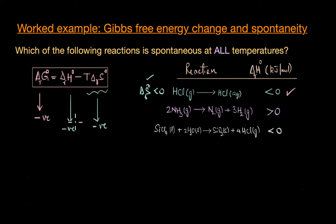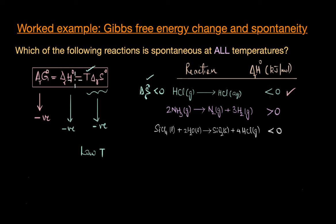Since both ΔH° and ΔS° are negative, this reaction is not spontaneous at all temperatures. To make it spontaneous, we need a very low temperature so that the contribution from TΔS° is minimized. At higher temperatures, TΔS° becomes much larger and can overcompensate the negative enthalpy change, resulting in a positive ΔG°, making the reaction non-spontaneous. Keeping the temperature low ensures the enthalpy factor dominates and ΔG° remains negative.